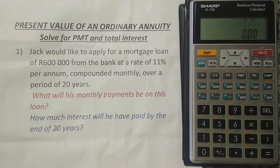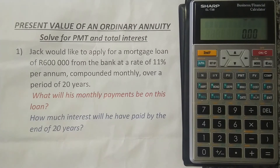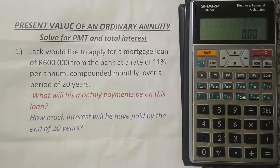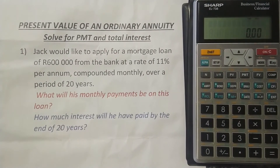There are two ways you can do this using your financial calculator. The first way is to tell the calculator how many compoundings you have in a year and then it will do the calculations for you. The second way is to do the calculation manually. I'm going to show you both ways, starting with telling the calculator how many compoundings there are in the year.